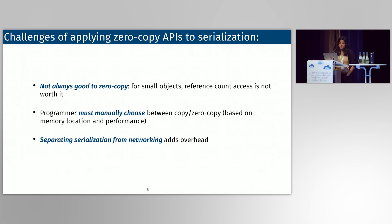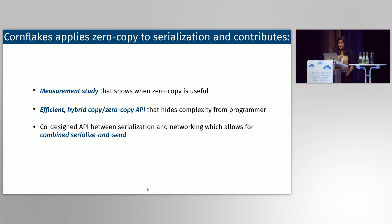We've seen a couple of challenges in applying zero copy APIs to serialization. The first is that it's not always good to zero copy because for small objects, copying may be better. The second problem is there are two representations — copy and zero copy — and with existing APIs, programmers have to manually reason about both based on performance and memory location. The third problem is we somehow have to get application data pointers into a form the NIC can understand so it constructs the correct contiguous buffer, and having serialization as a separate layer from networking added extra overhead.